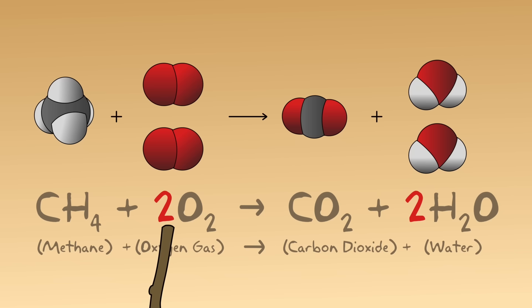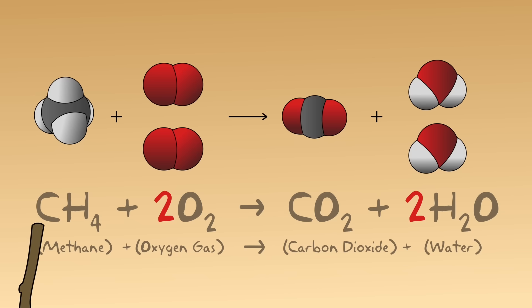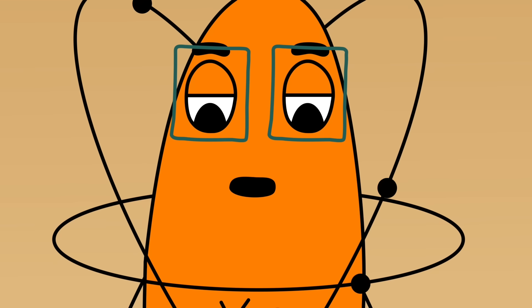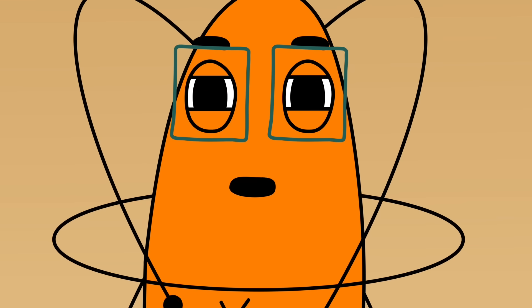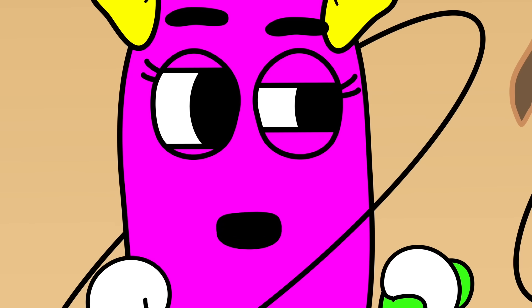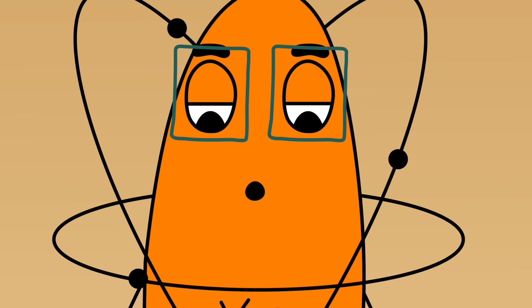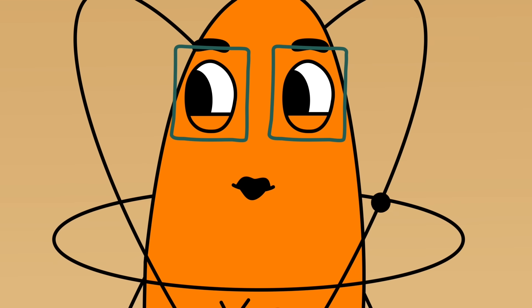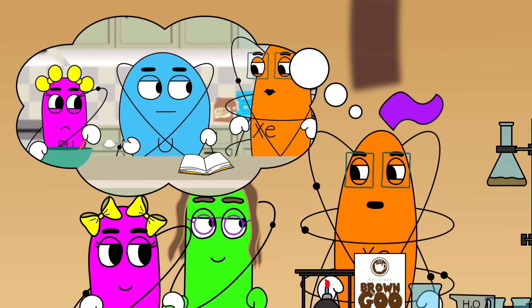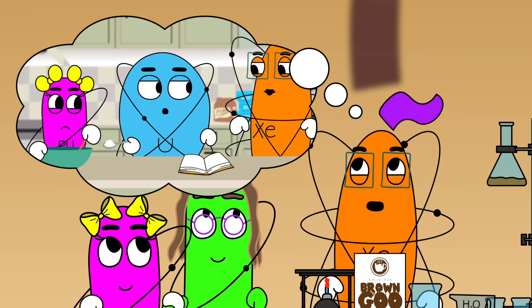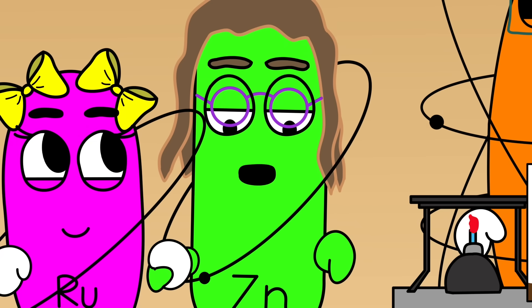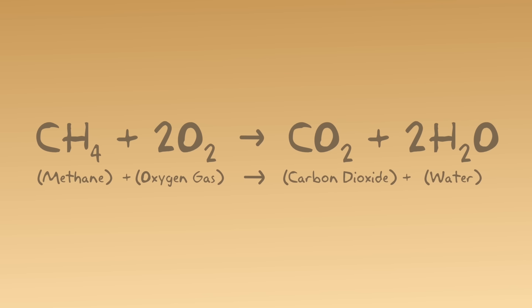Zinc: So we have two O2, or oxygen gas molecules, in this formula, and two water molecules, but there's no coefficient in front of methane or carbon dioxide. Xenon: Correct. When there's no coefficient, we presume there's just one molecule, or one molar portion. In reality, we're generally talking about moles of compounds — a very large group of atoms or molecules. So this formula represents: one portion of CH4 methane gas combines with two portions of oxygen gas to become one portion of carbon dioxide gas and two portions of water, H2O.